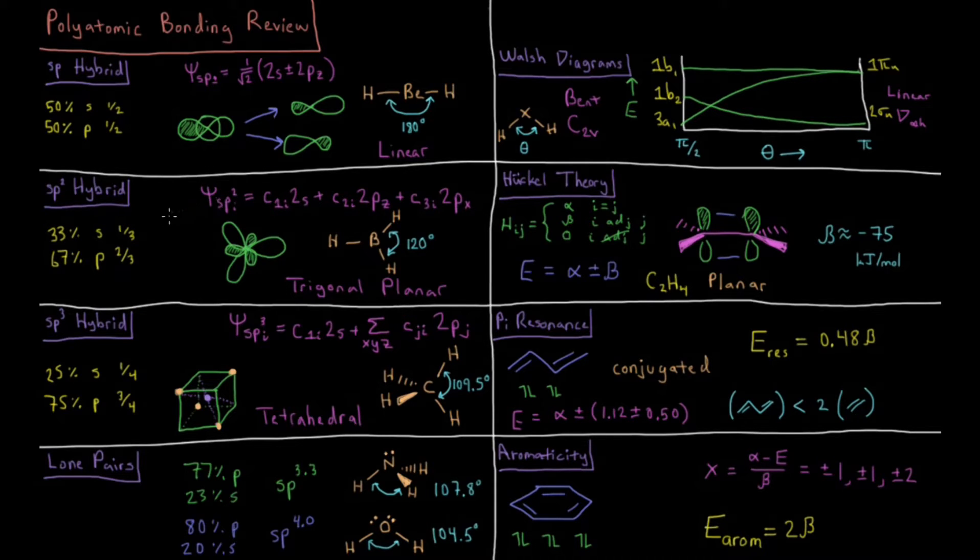If we want that for a trigonal planar molecule like BH3, that's going to be 120 degree bonding angles, and we need sp2 hybrid orbitals to accomplish that. Now we're in the plane here, which I've defined as the zx plane. We need to add our 2s, 2pz, and 2px orbitals such that the coefficients will make three orbitals which point towards each of the hydrogens.